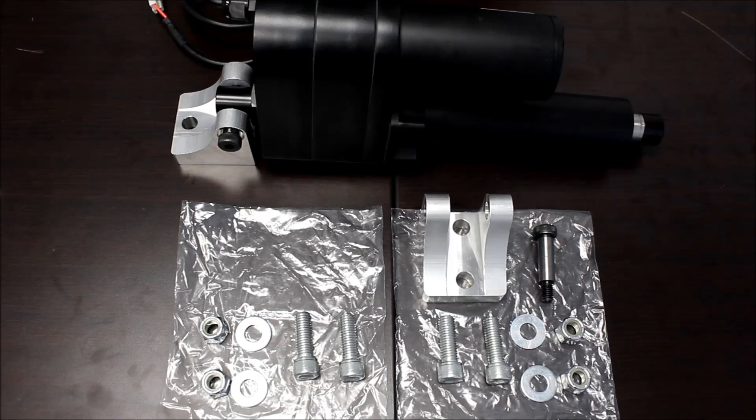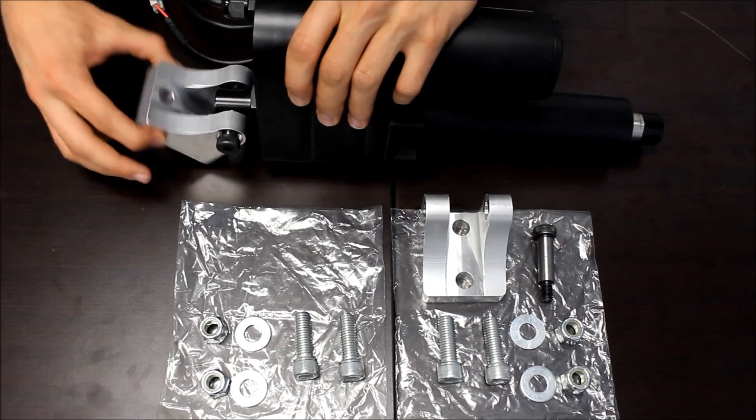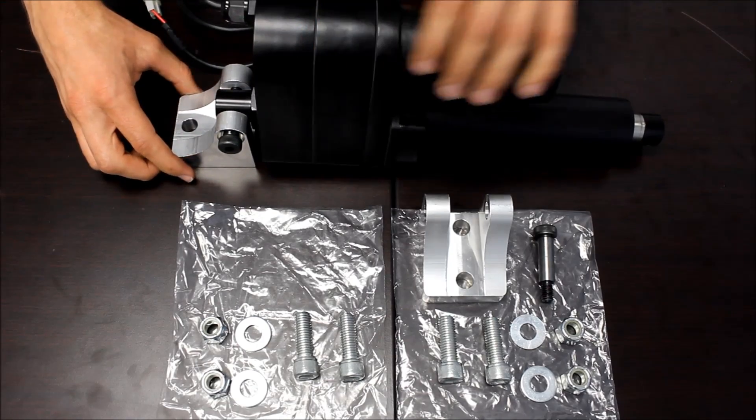The PA17 uses our heavy duty BRK17 mounting brackets. They mount on both the stroke end and the motor end and can be used to mount the actuator at a variety of positions.